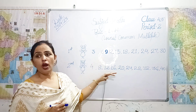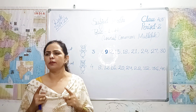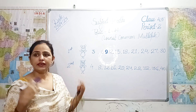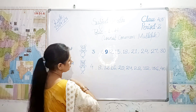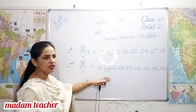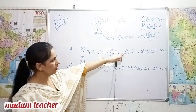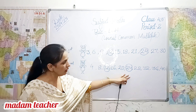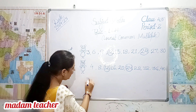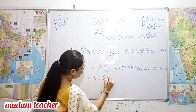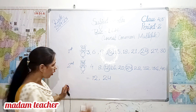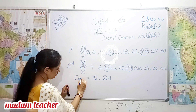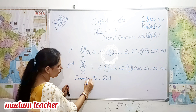Unhoney jo race lagai hai, woh in points par pahunchi hai. Ab hum yeh dekhte hain woh kahan kahan mili hain. Dono rabbits aapas mein ek dusre se kahan kahan mili hain. So let us check the same points. They met at twelve and twelve — common point hai! Then twenty-four and twenty-four — yahan par dono mili hain.